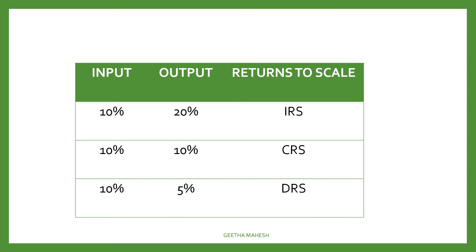Now let us discuss the shapes of long run cost curves. The shapes depend on returns to scale. There are three stages of returns to scale: increasing returns to scale, constant returns to scale, and decreasing or diminishing returns to scale. Returns to scale explains how the proportion of increase in input leads to a change in the proportion of output. Based on how much change has taken place in output due to change in input, we decide which stage of returns to scale applies.